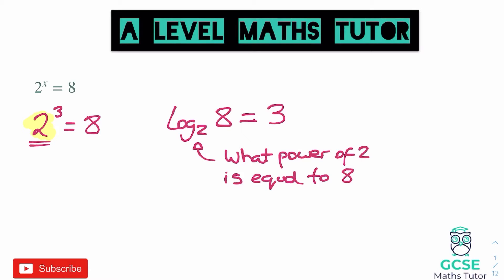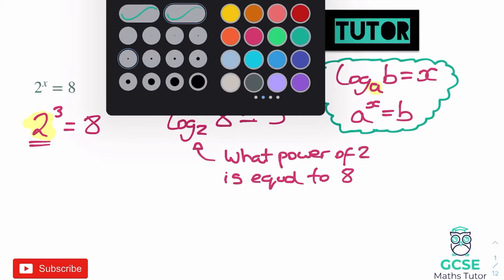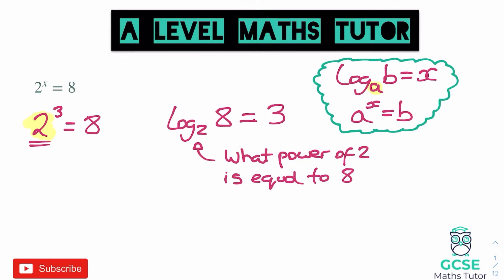We could write this with letters rather than numbers. We could say log base a of b is equal to x. And what that means in terms of a power: a to the power of x equals b. That is something pretty key to write down, because that's how we're going to be writing these in different ways as we move through this video. Log base 2 just means: the number 2 to the power of something gives us this answer. So what power of 2 gives us the answer 8? That power is 3.